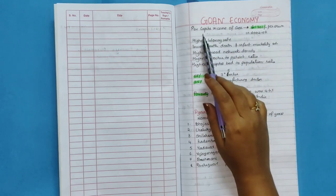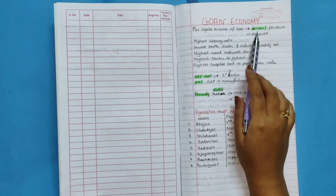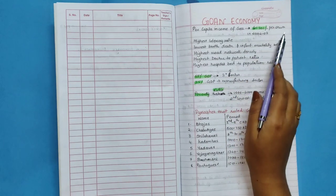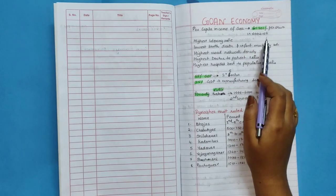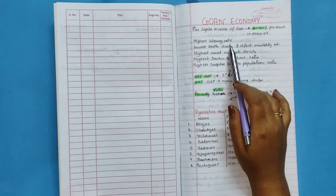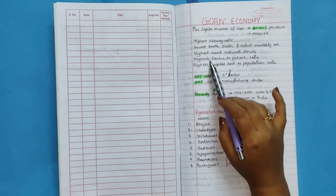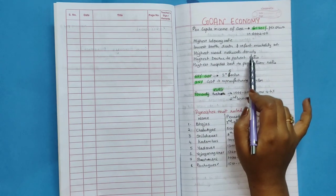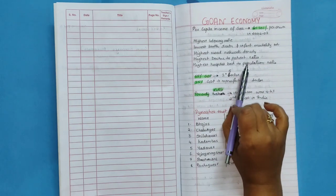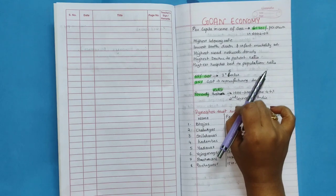Goan Economy. Per capita income of Goa is 61,301 rupees per annum in 2002-2003. It had highest literacy rate, lowest birth, death and infant mortality rate, highest road network density, highest doctor to patient ratio, highest hospital bed to population ratio.